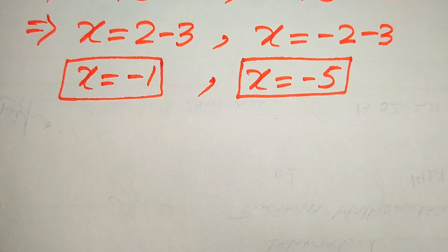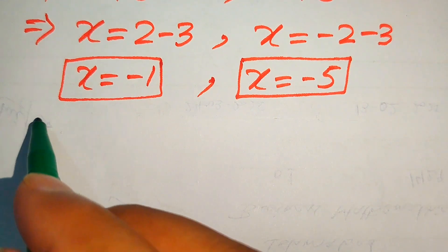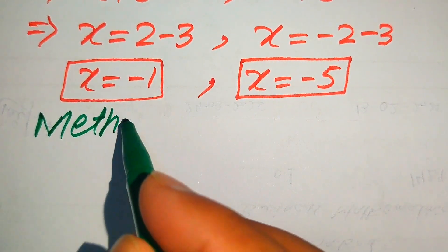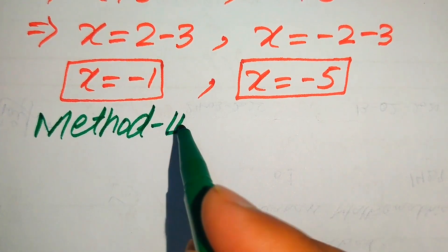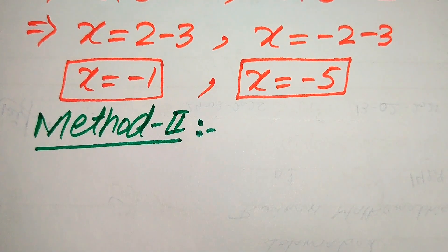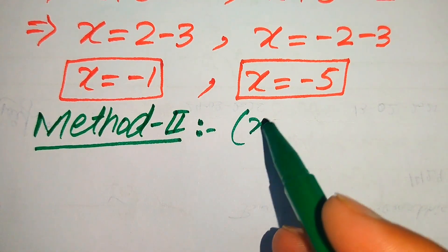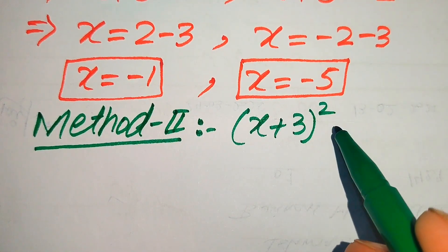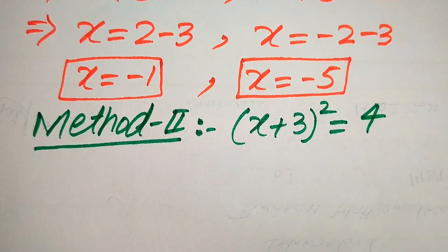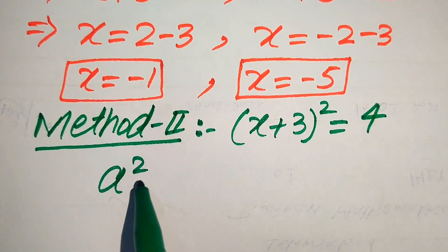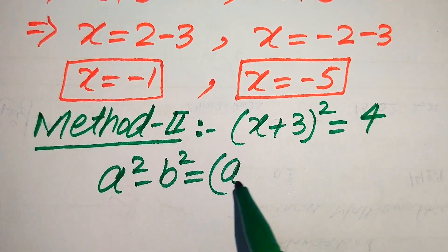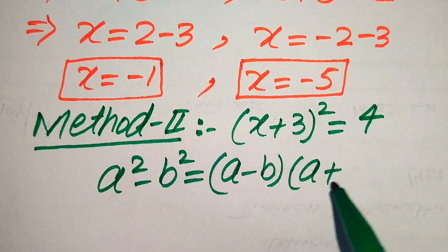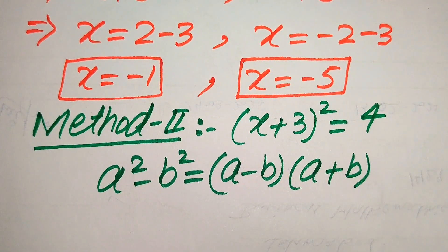Now we solve the same problem using a second method, and at the last we will verify the roots and check which are solutions and which are extraneous roots. In the second method we use the algebraic formula: a² − b² = (a − b)(a + b).